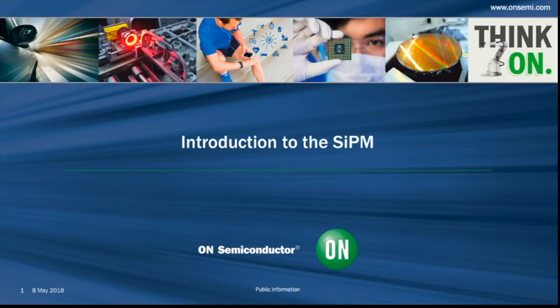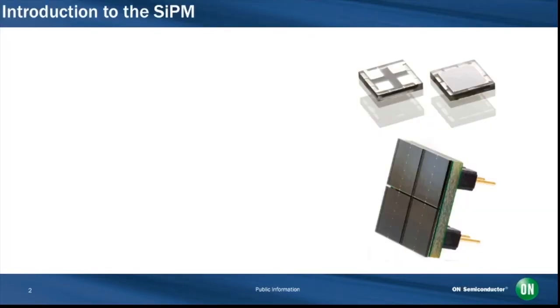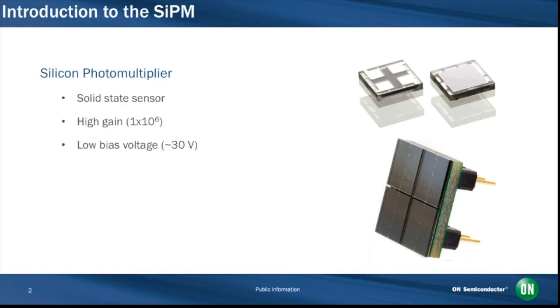This presentation is an introduction to the SIPM. The SIPM, or silicon photomultiplier, is a solid state sensor which has a high gain achieved at low bias. It has single photon sensitivity from the near UV to the near infrared, with a peak detection efficiency of around 50%.